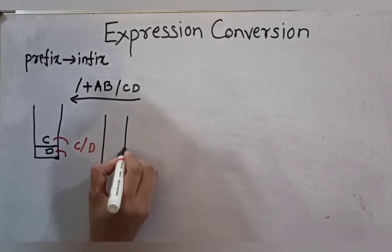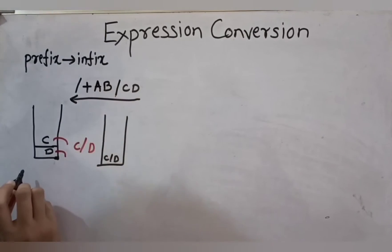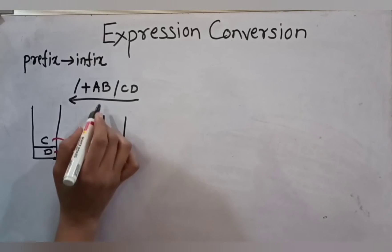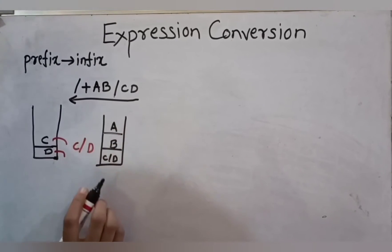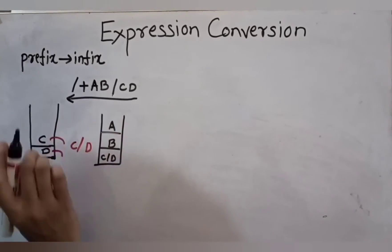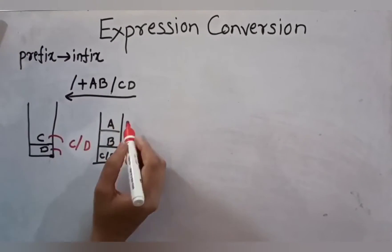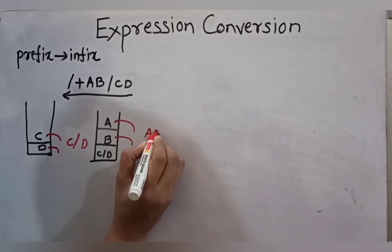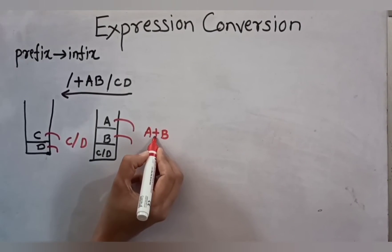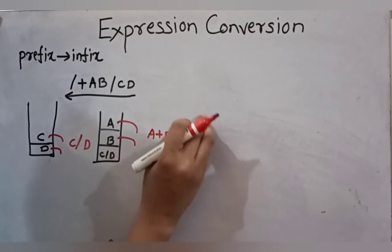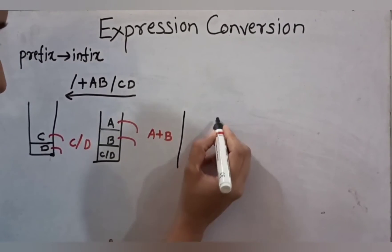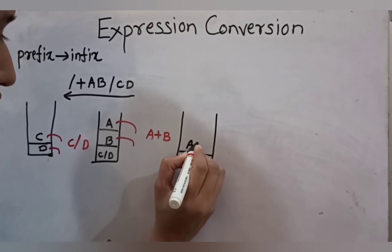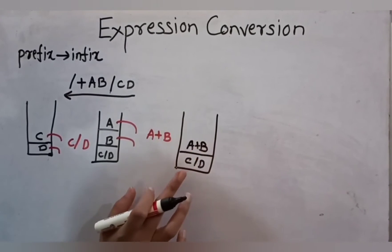Now the stack contains C slash D. The next character is B — an operand — so push it onto the stack. Next character is A, also an operand, push it onto the stack. Next is the plus operator. The topmost two operands A and B are deleted from the stack, and we form A plus B with the operator in between. This A plus B is pushed back onto the stack. The stack now has C slash D at the bottom and A plus B on top.